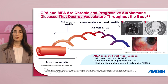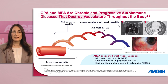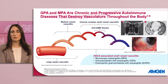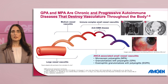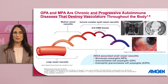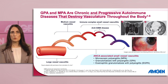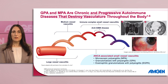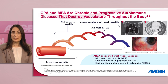ANCA-associated vasculitis is a group of relatively rare but severe systemic autoimmune diseases characterized by inflammatory cell infiltration leading to necrosis of predominantly small to medium-sized blood vessels, and impact on critical organs. ANCA-associated vasculitis consists of three disease entities: microscopic polyangiitis, or MPA; granulomatosis with polyangiitis, GPA; and eosinophilic granulomatosis with polyangiitis, or eGPA. In today's presentation, we'll focus on GPA and MPA.